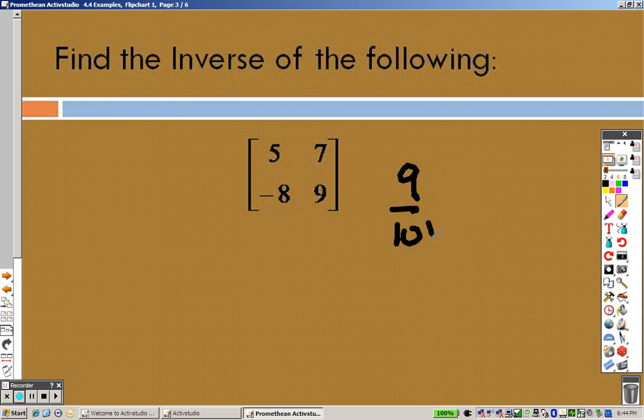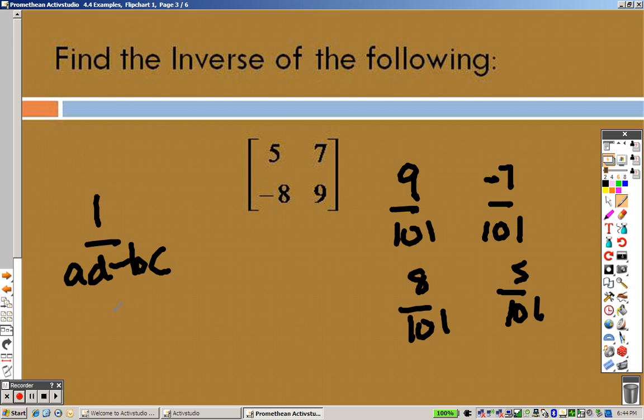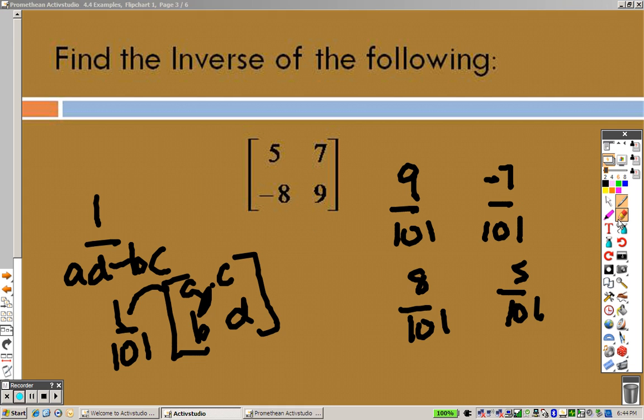You get 9 over 101. You get negative 7 over 101. You get 8 over 101. And you get 5 over 101. Why? Because when we did 1 over AD minus BC, we got 1 over 101. And then, what do you do? You keep A and D the same, and you flip them. Right? So that's B, but now B's down here, and that's C. So all I did was multiply 101 times. Or sorry, I had that backwards. I had that backwards. You flip those, so that's D and that's A, so you flip them. And then you make each of these negatives. So negative C and negative B is what you do.